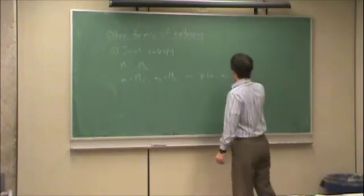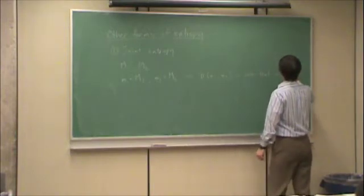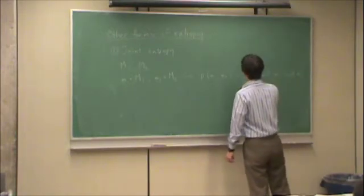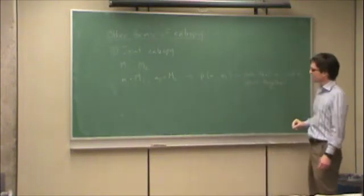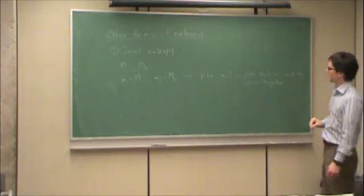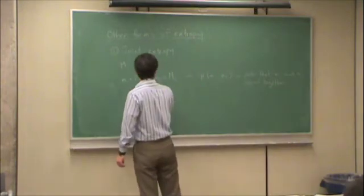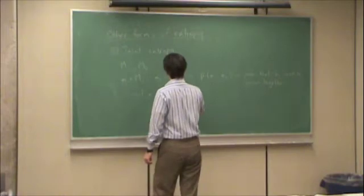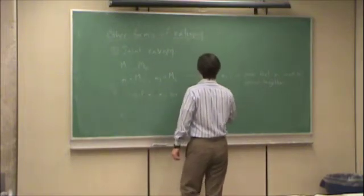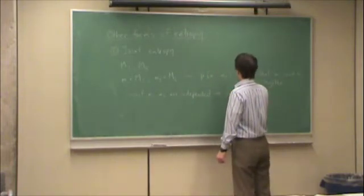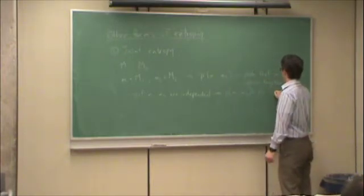The interpretation of that is the probability that m1 and m2 occur together. From probability, you should remember that if m1 and m2 are independent, then the probability of m1 and m2 is equal to the probability of m1 times the probability of m2.